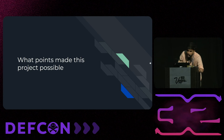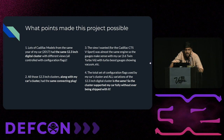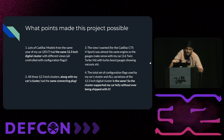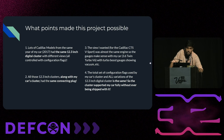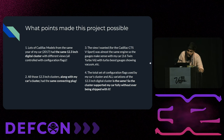So what project points actually made this possible? The 12.3-inch fully digital gauge cluster was available in a whole bunch of Cadillac models from the same year, just with different views, and they simply didn't ship it with my car. On top of that, the plug on the back was the same as my car — already a good indication. The view I wanted was available on a Cadillac CTS V-Sport, same 3.6-liter twin-turbo engine. And it turns out the total set of configuration flags was the exact same between the needle cluster and the 12.3-inch digital one. This gauge cluster could have fit my car the whole time — GM just decided not to ship it.